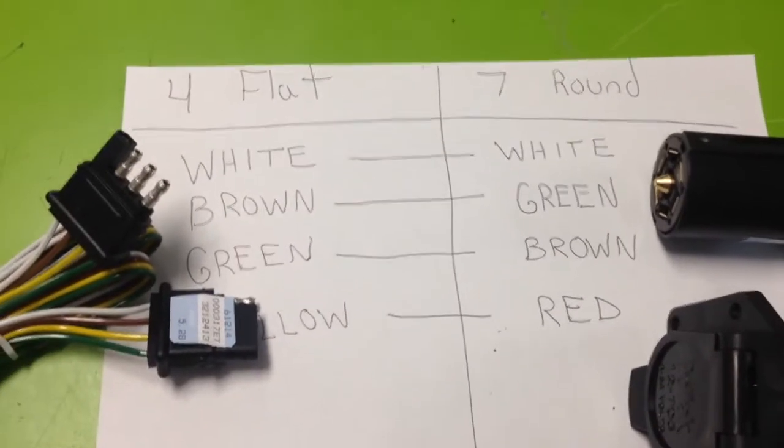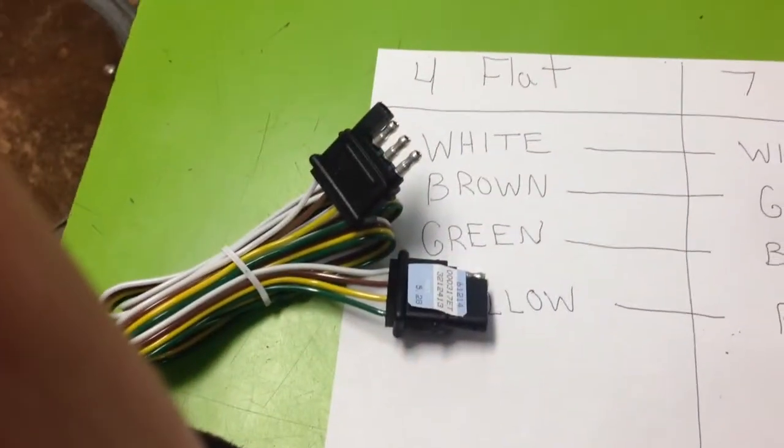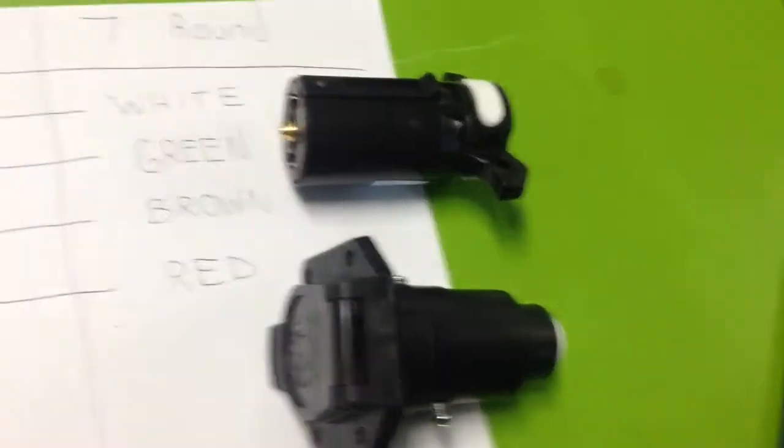This is the wiring code when you're going from a four flat male or female to a seven round male or female.